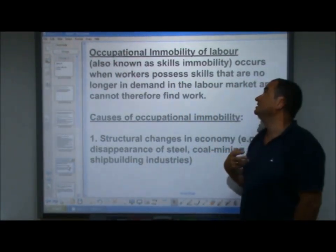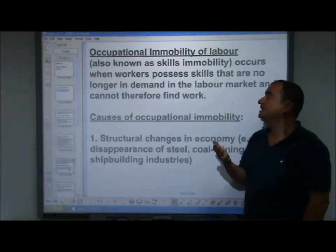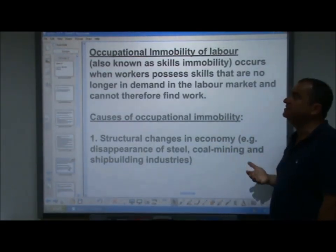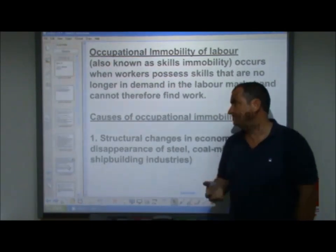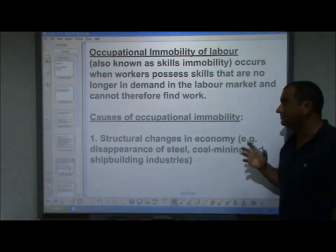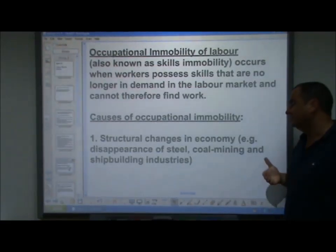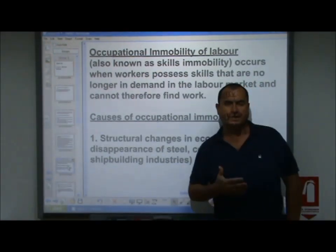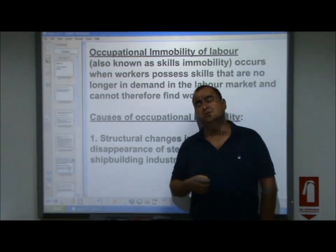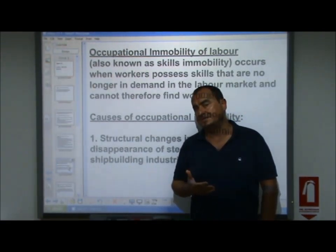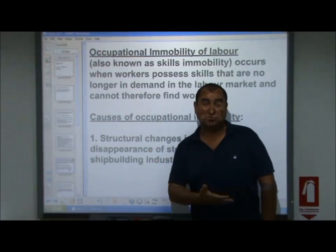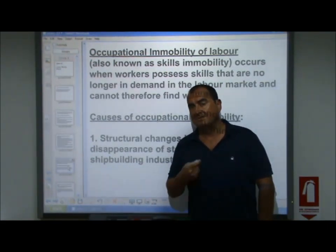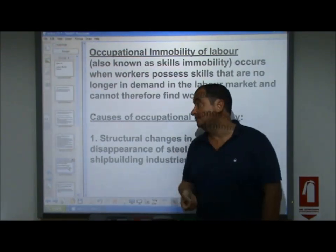Now let's look at occupational immobility of labour, also known as skills immobility. This occurs when workers possess skills that are no longer in demand in the labour market and therefore cannot find work. The main cause is structural changes in the economy — for example, the disappearance of the steel industry, coal mining, and shipbuilding industries have left many skilled workers unemployed because their skills are no longer demanded. These industries have dried up in the UK, leaving people stranded with skills no longer in demand, suffering from occupational immobility.